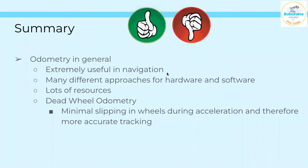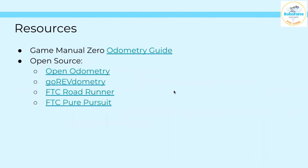Now that we've gone over all the main aspects of odometry, let's summarize it all. Odometry in general is extremely useful in navigation, and there are many different approaches for hardware and software with lots of resources both online and within the FTC community. For dead wheel odometry specifically, there's minimal slipping during acceleration and therefore it's very accurate. These are some resources we've compiled for you — they'll also be in the video description below. Thank you so much for listening to our presentation.